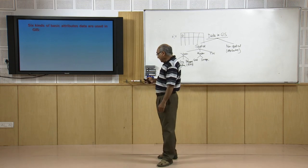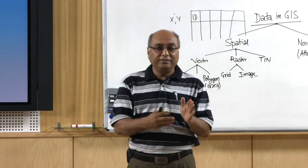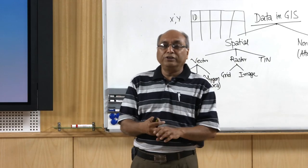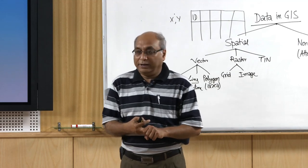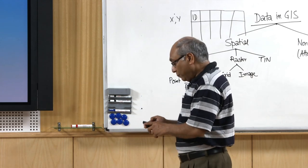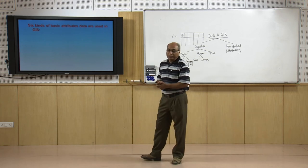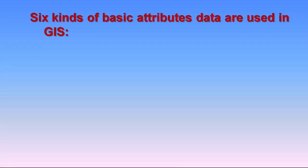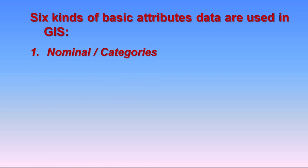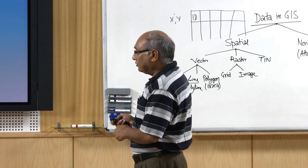Now we start looking at different types of attributes, just as we have seen different types of vectors and rasters. In case of TIN there is only a single type. But in case of attributes, 6 basic kinds or types of attributes have so far been implemented in GIS. In literature you may find slightly different numbers, but if you look carefully you will find that we can categorize them into at most 6 categories. Let us go through them one by one.